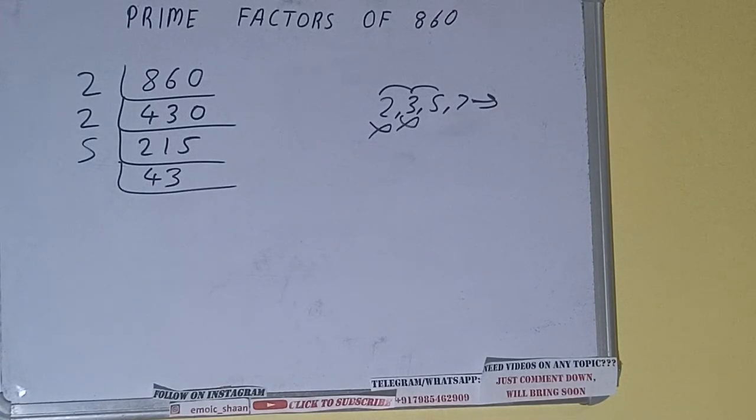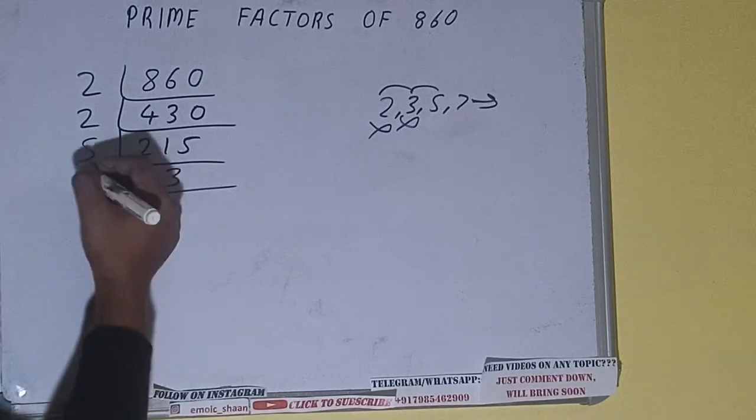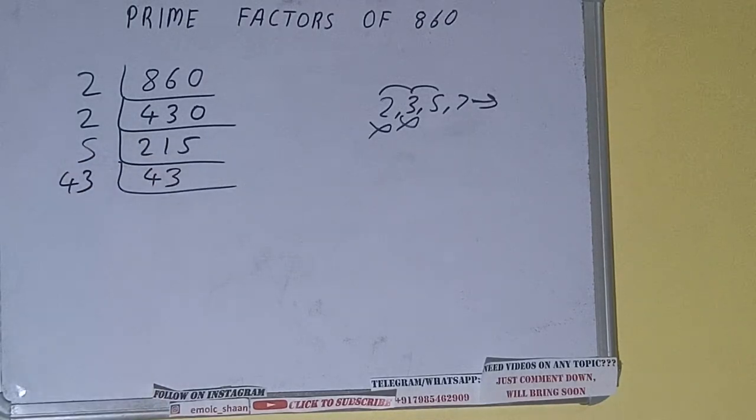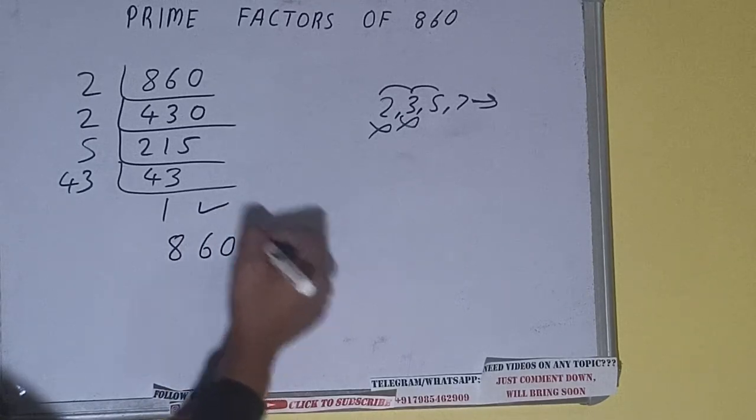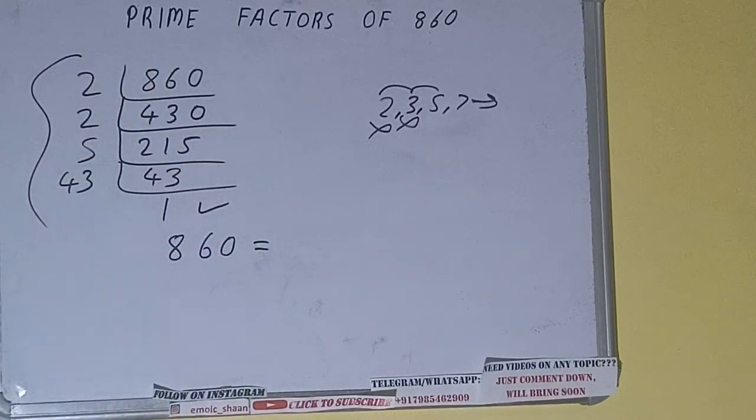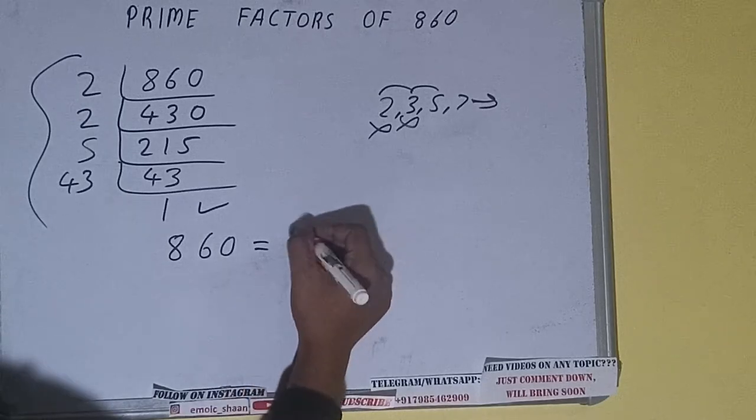Once we do so, we'll be getting 1. Once we get 1, we need to stop and do one last thing. The prime factorization of 860 equals multiplying whatever we have on the left-hand side: 2 × 2 × 5 × 43. That will be the answer.